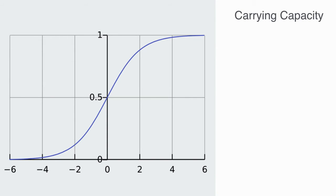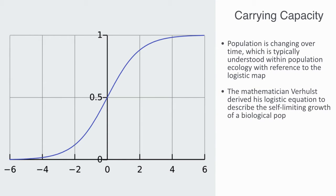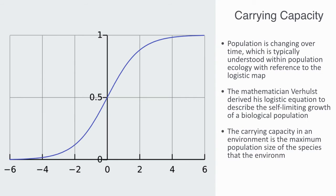One of the first things to add to this model is that the population is changing over time. The rate of population growth is typically understood within population ecology with reference to the logistic map, where the rate of growth is proportional to both the existing population and the amount of available resources. The mathematician Verhulst derived this logistic equation to describe the self-limiting growth of a biological population. Adding this dynamic gives us the concept of carrying capacity — the maximum population size that an environment can sustain indefinitely, given the available ecosystem services. The carrying capacity defines the environment's maximum load to which the population can grow and exist sustainably.